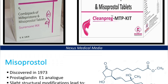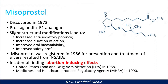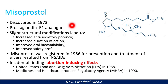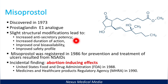Let's begin with misoprostol. It was discovered in 1973 and is a prostaglandin E1 analog. If you know the naturally occurring prostaglandin, this is just a modified version. A slight structural modification leads to the following features that make misoprostol superior: it has increased antisecretory potency.